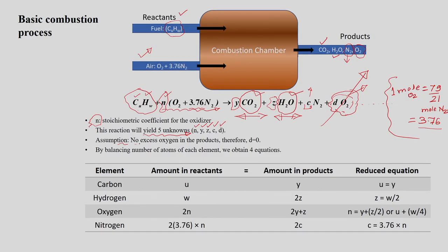The assumption here is no excess oxygen in the product — this is the stoichiometrically (or theoretically) balanced equation, meaning the theoretical air required for combustion. The excess oxygen will not appear in the product. By balancing the number of atoms of each element — carbon, hydrogen, oxygen, and nitrogen — we get 4 more equations, giving us 5 equations for the 5 unknowns.